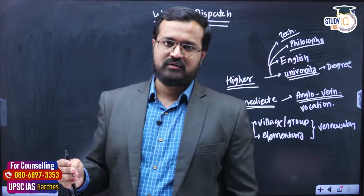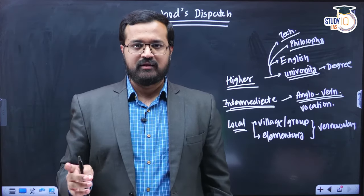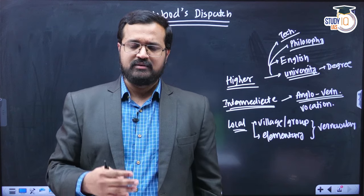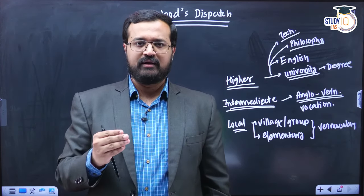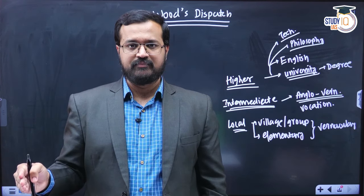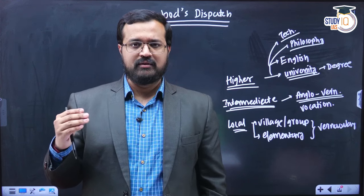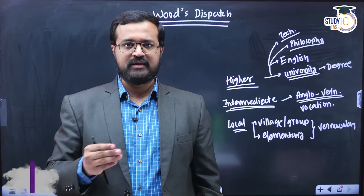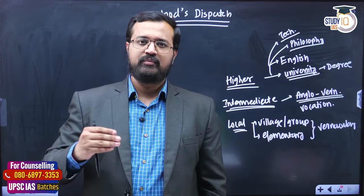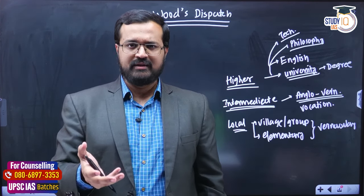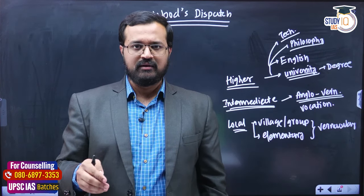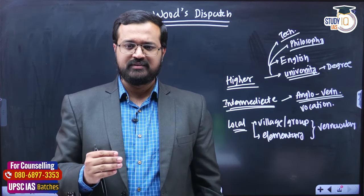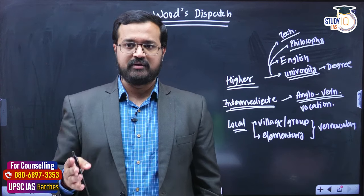This three-tier education system ended the Anglo-Oriental controversy once and for all. Though Macaulay had given his verdict in favor of English education, the debate was still ongoing. This system balanced vernacular at elementary level with English at university level. However, they realized that the Thomsonian education system at village level was very expensive and non-workable, so elementary education was ultimately implemented at the district level over a period of time.